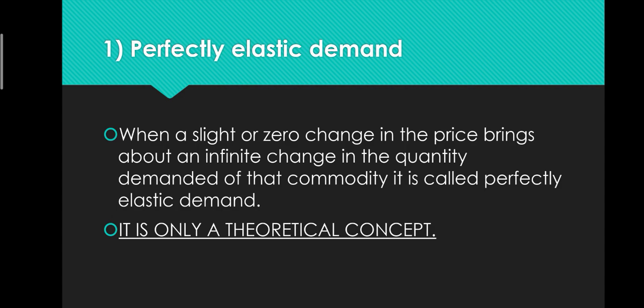The first type is perfectly elastic demand. Looking at the heading carefully, it means demand can be increased as much as you want — but in actual practice, is there any product in the market whose demand can keep increasing endlessly? That is not possible. So, as clearly written in the slide in bold: it is only a theoretical concept. According to Alfred Marshall, when a slight or zero change in price brings about an infinite change in the quantity demanded of that commodity, it is called perfectly elastic demand.